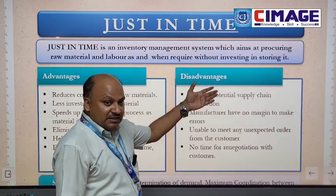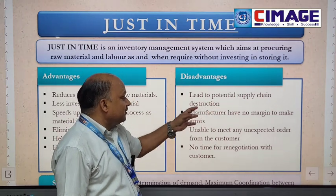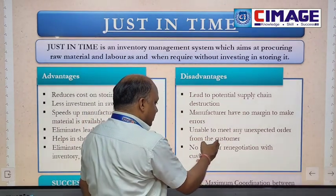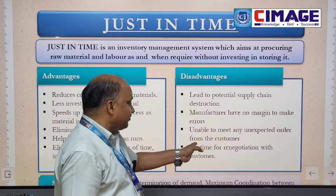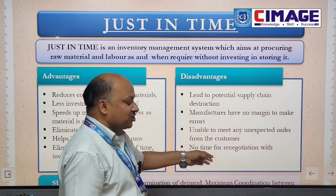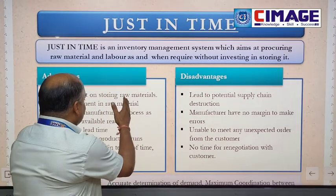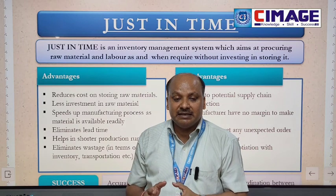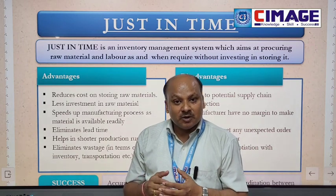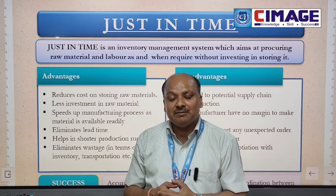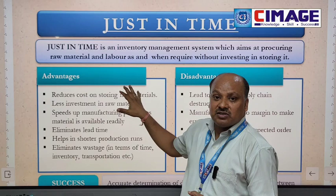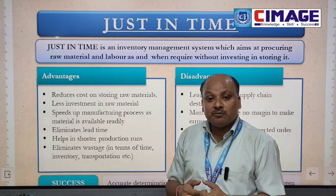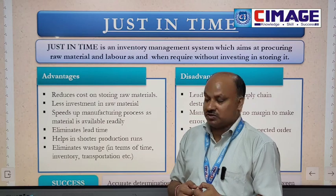On the other hand, the disadvantages of Just-in-Time are: it leads to potential supply chain disruptions; manufacturers have no margin to make errors; it is unable to meet any unexpected orders from customers; and there is no time for reconciliation with customers. Hope you have understood the concept of inventory management system, its process, and its objectives, as well as the Just-in-Time concept. The next video will continue with another type of inventory management system known as ABC analysis. Thank you so much.